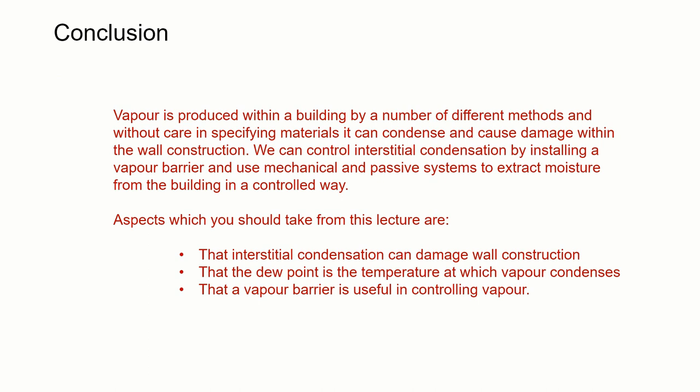In conclusion, vapor is produced within a building by a number of different methods. Unless we take care in specifying the materials and the construction, it can condense within the depth of the wall and cause damage. We can control interstitial condensation by installing a vapor barrier, which seals up the inside of the house, and we can use active and passive systems to extract moisture from the building in a controlled way.